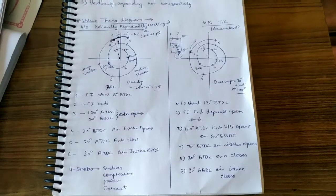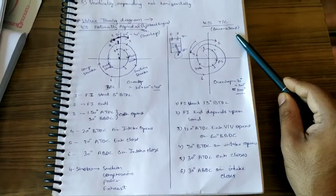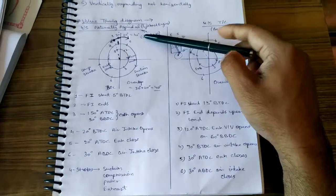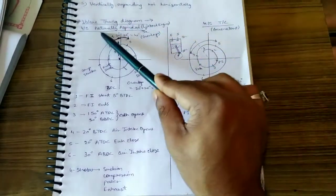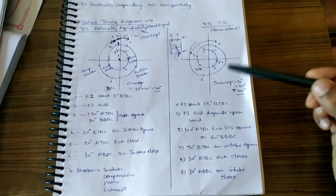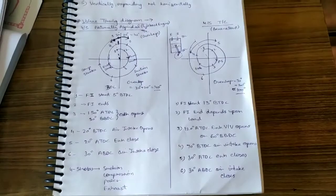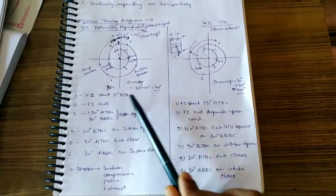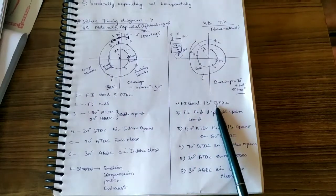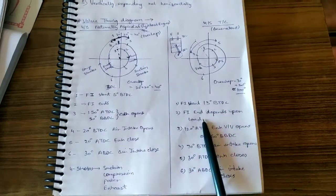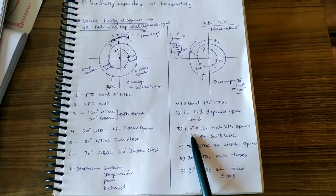Now we will talk about the four-stroke turbocharged engine — examples include generators. The previous diagram was for the naturally aspirated live-aboard engine. In this turbocharged diagram, the angles have changed slightly. Initially the fuel injection started five degrees before TDC, but now it has changed to 13 degrees before TDC, and the fuel injection end depends upon the load.